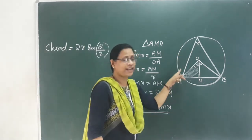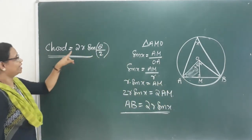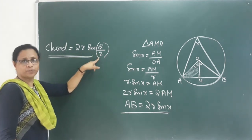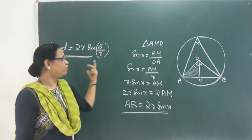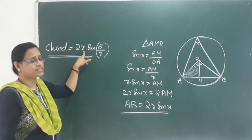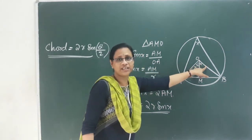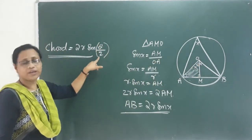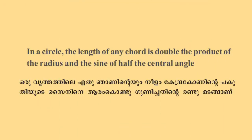We find the length of the chord using this formula. The length of the chord equals 2R sin(θ/2). That is the formula: chord = 2R sin(θ/2).